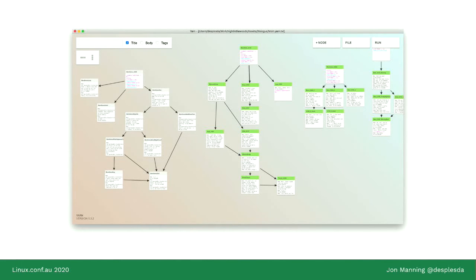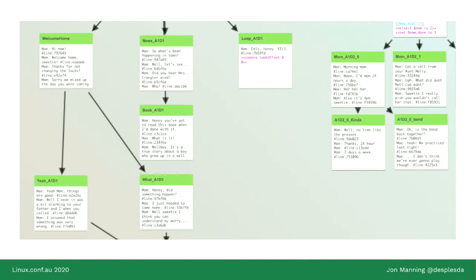Here's a screenshot of some of the source code for one character — the main character's mother. Each node contains a chunk of script: it can contain a single line of dialogue or multiple lines — we leave that entirely up to the writer. Writers tend to prefer creating new nodes when there's an important branch in the plot, whereas smaller, less important choices can be kept within the nodes. You can get a good idea of how branching a story is without worrying about trivial choices like 'I want sandwich or I want soup.'